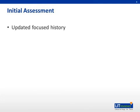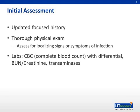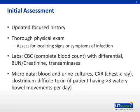The initial assessment of this patient includes an updated focused history, any new signs or symptoms that have developed, followed by a thorough physical exam looking over the skin, a good pulmonary exam, a neurologic exam, and asking any questions related to abdominal complaints while examining the abdomen. Laboratory studies include a CBC with differential, a BUN and creatinine or a CHEM 7, as well as transaminases or a GI panel. Microbiologic data — some of the most important data you obtain — includes blood and urine cultures, a chest x-ray, and a Clostridium difficile toxin, especially if they're having symptoms such as more than three watery bowel movements in a day.